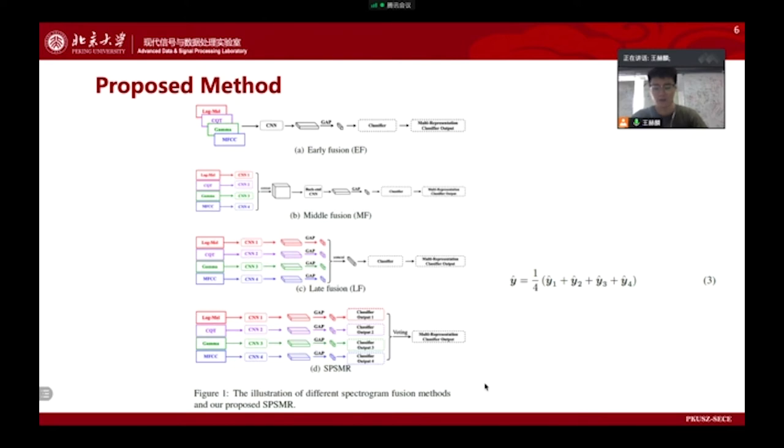As shown in Figure 1A, one approach to apply multiple representations is inputting the multi-channel feature maps. However, different representations have different characters, and a single CNN network cannot model the differences effectively.